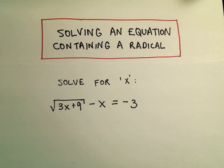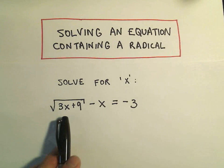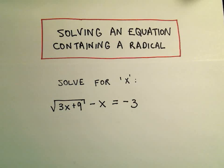Alright, in this video I'm going to do one more example of solving an equation containing a radical. So in this case we have the square root of 3x plus 9 minus x equals negative 3.